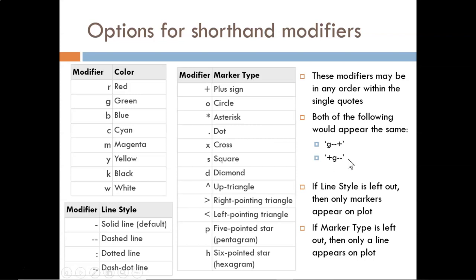Also, you are not required to choose a line style or a marker type. If the line style is left out, then you will create a scatter plot with no lines connecting the dots. If the marker type is left out, then you will create a line plot with no markers. One last note, for the color black, use the modifier K. The B was taken already by blue.